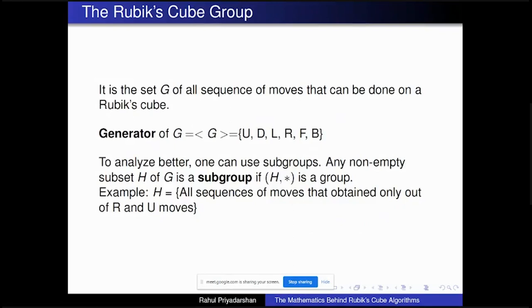To study the Rubik's cube group more carefully, you can break it into smaller pieces called subgroups. A subgroup is a subset of the group that still satisfies all four group properties using the same operation. An example would be all sequences of moves obtained only from R and U moves. With this framework, we can explore really interesting properties.